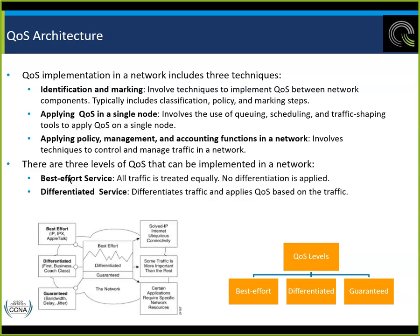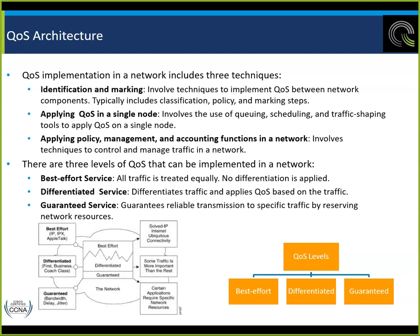Three levels of QoS: best effort, differentiated services, and guaranteed services. Best effort is the default — it's first come, first served, like getting into the DMV line or the checkout at Walmart. Differentiated services applies QoS to the traffic — like first class, business class, and coach class on an airline. If you're in first class, you get better service.